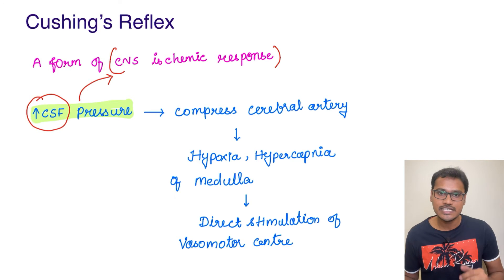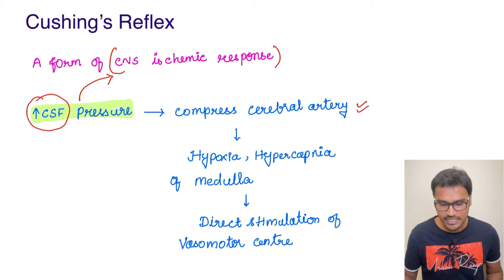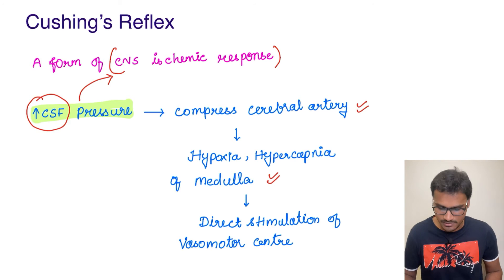What happens when the CSF pressure is going to increase? It is going to compress the cerebral artery. There is going to be hypoxia as well as hypercapnia in the medullary region, and all this will lead to direct stimulation of the vasomotor center as well as the respiratory centers nearby.